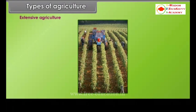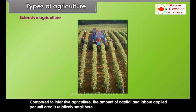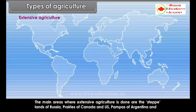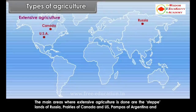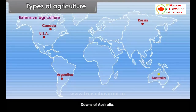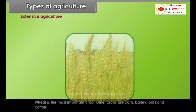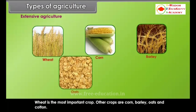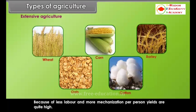Extensive agriculture differs from intensive agriculture in that the amount of capital and labor applied per unit area is relatively small. The main areas where extensive agriculture is done are the steppe lands of Russia, prairies of Canada and the US, pampas of Argentina and downs of Australia. Wheat is the most important crop, while other crops include corn, barley, oats and cotton. Because of less labor and more mechanization, per person yields are quite high.